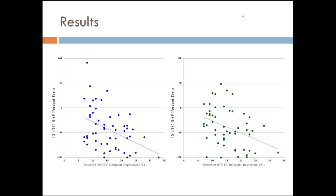These are two scatter plots of the observed dewpoint depression at 0Z versus the forecast percent error — surface-based CAPE forecast percent error from the 12Z RAP and the 18Z RAP, for all 56 cases. You can start to see that as your dewpoint depression increases, you're also becoming more negative with your percent error — really getting into the cases that were very far underforecast when the environment was also extremely dry. So it gives you a better idea of the types of environments where these errors are occurring, especially at the surface.